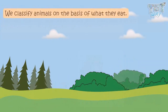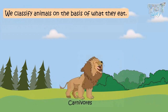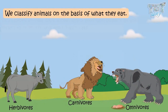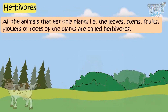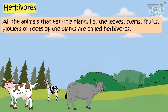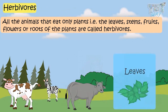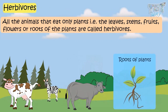We classify animals as carnivores, herbivores, or omnivores. All the animals that eat only plants — the leaves, stems, fruits, flowers, or roots of the plants — are called herbivore animals.